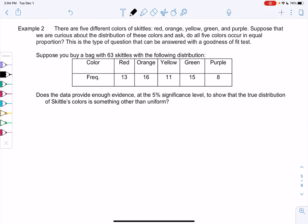Section 10-2, example two. There are five different colors of Skittles: red, orange, yellow, green, purple, and we're curious about their distribution. And we ask, do all five colors occur in equal proportion?